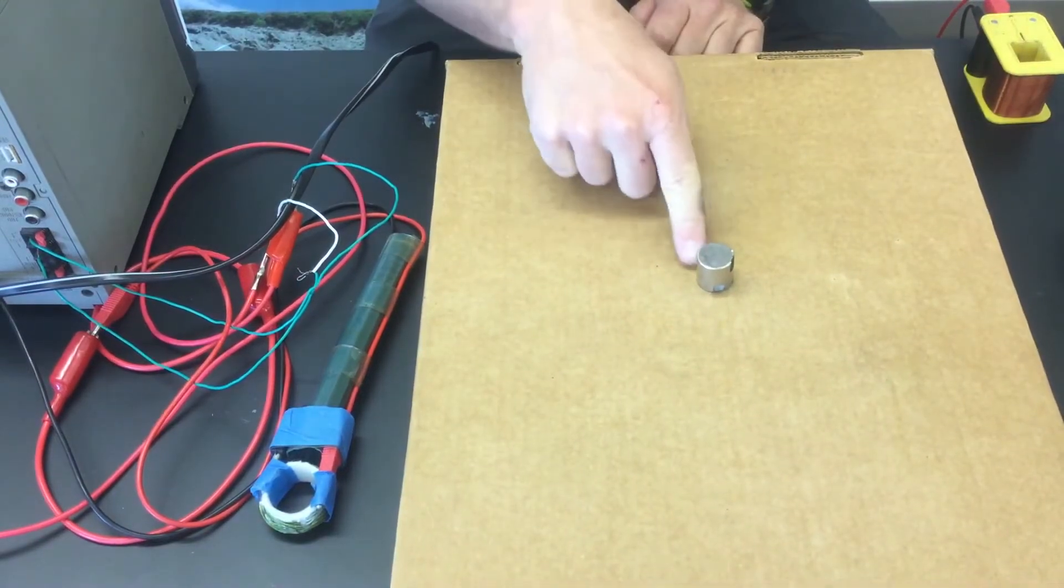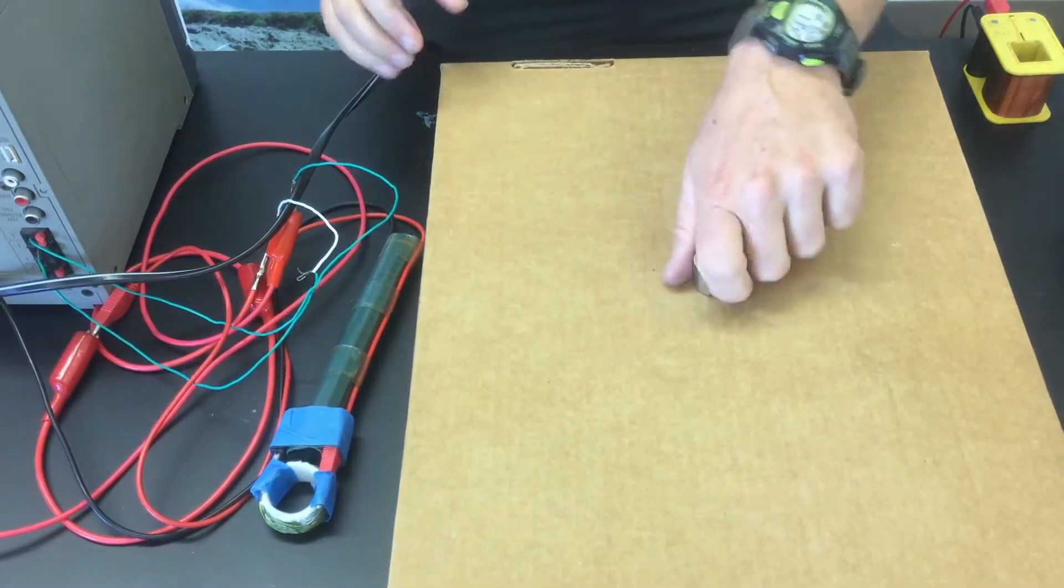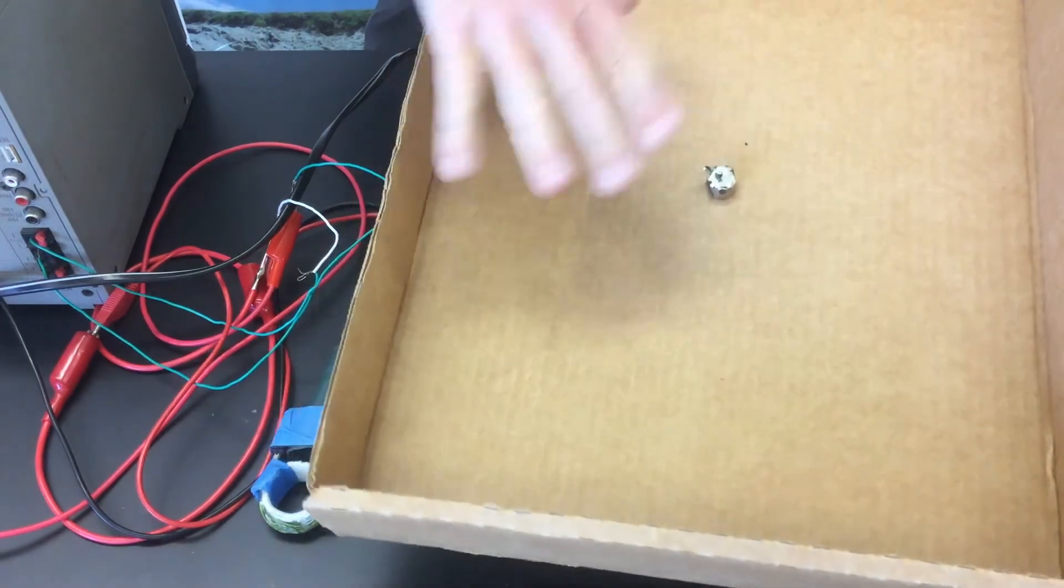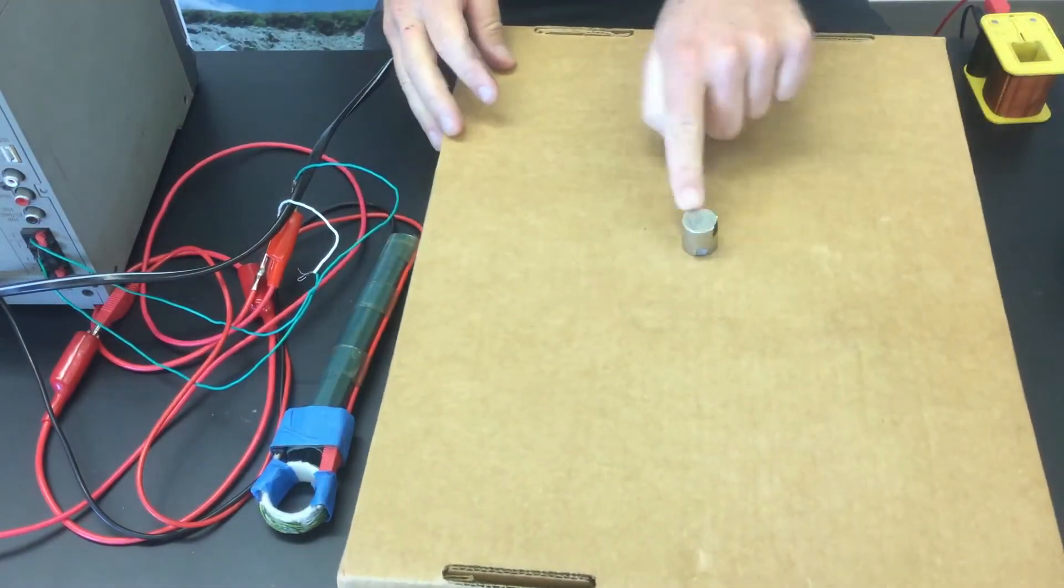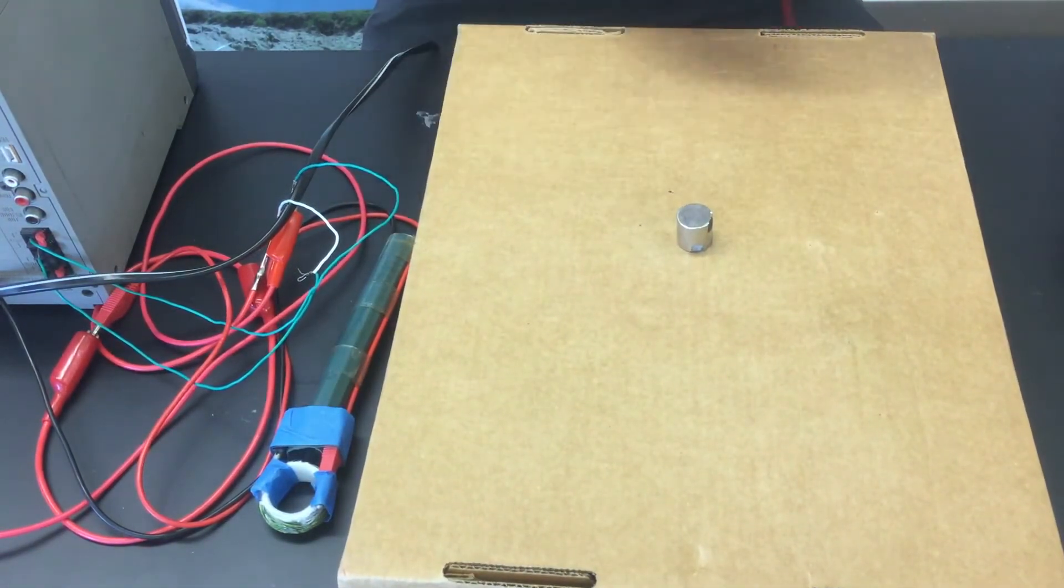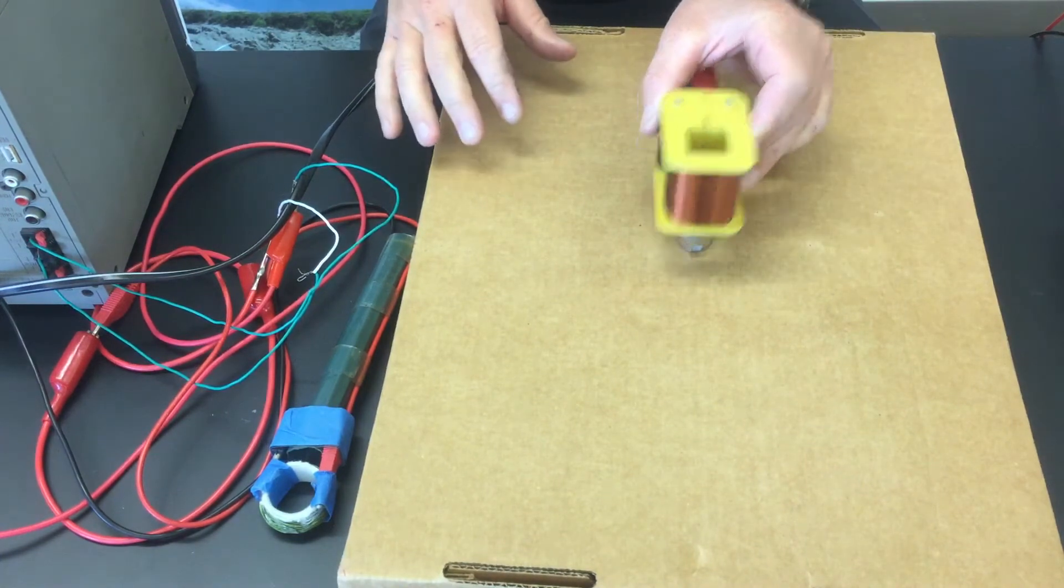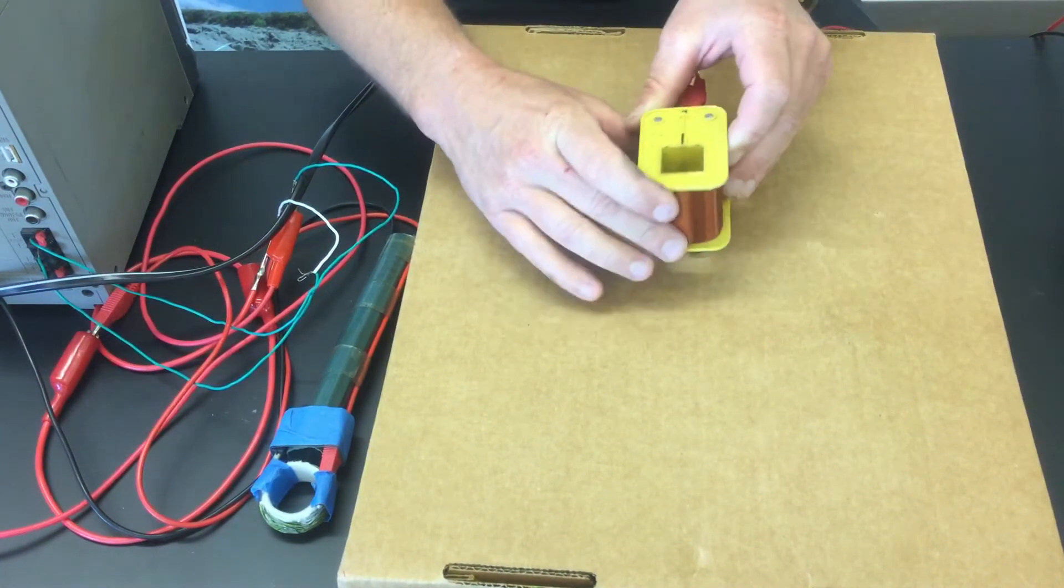All right, so what I've done here is I've just taken that magnet and put it so that there's one magnet on one side of a cardboard lid and another magnet on the other side. You can see that when I bring this coil by it, it still makes that sound when I get close to the magnet.